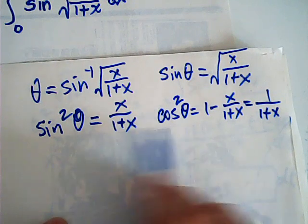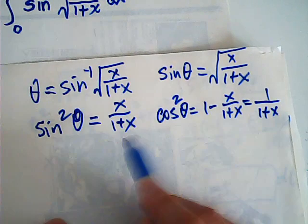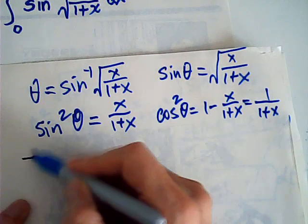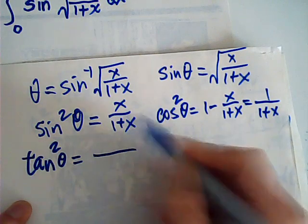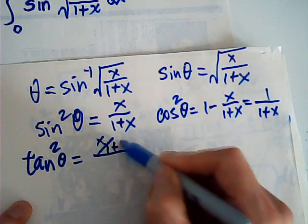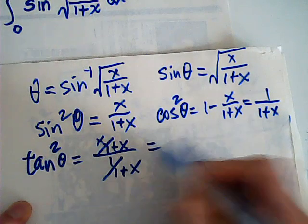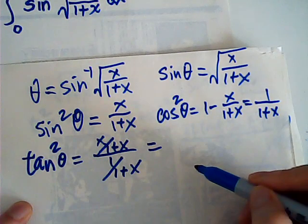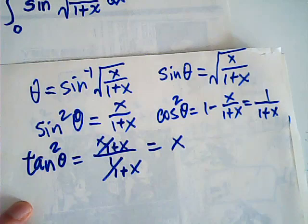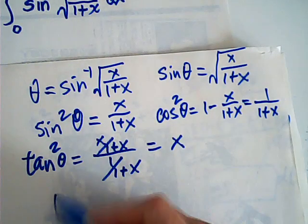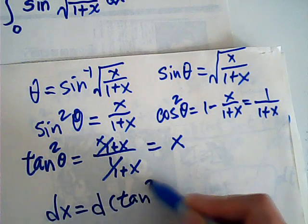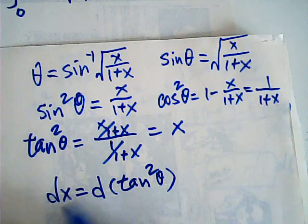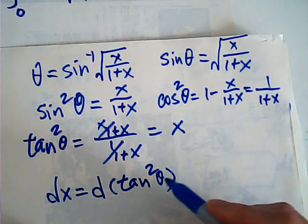Now, how to find x from these two? I think we use tangent. Tangent squared theta is equal to sine over cosine, and it is equal to x. That's good. Therefore, dx is equal to d of tangent squared theta.